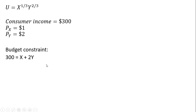The first thing we'll do is construct the budget constraint. On the left-hand side we have the consumer's income — in this case $300. That equals the price of good X times units of good X. Since the price of good X is $1, we're just going to have 1X, or simply X.